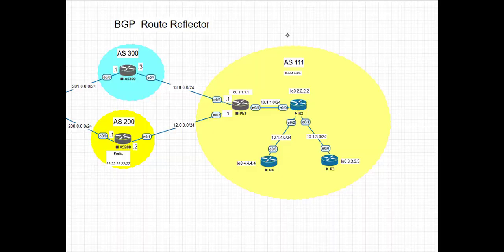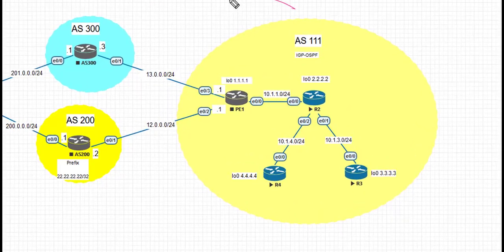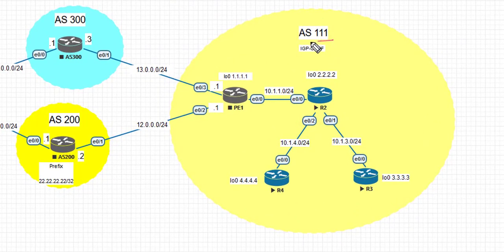Welcome back. Today we're going to configure BGP route reflection in this topology. As we can see, we have AS111, and first of all let's take a look at the setup.